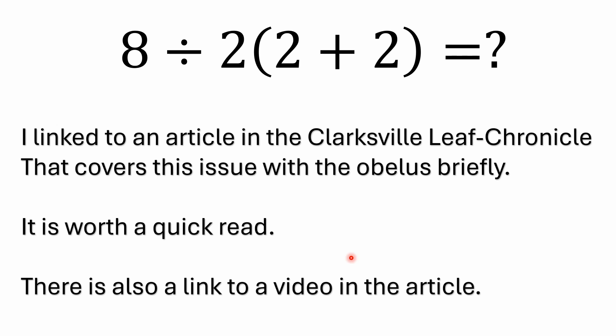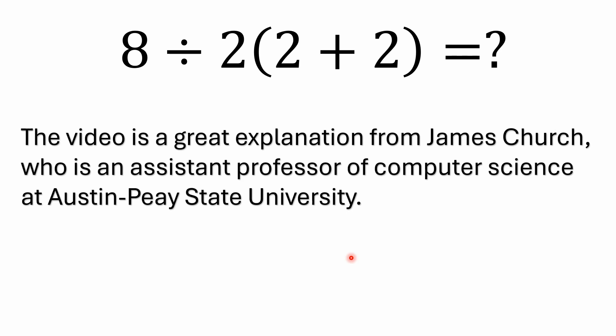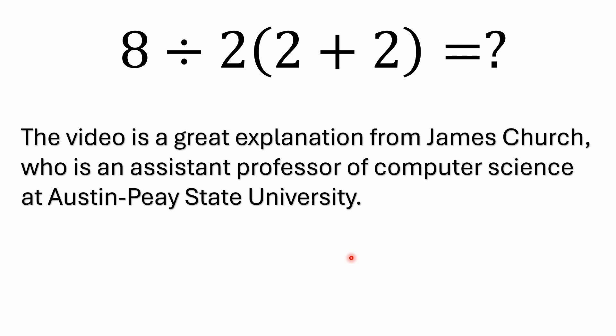Now, there was an article, gosh, I don't know if I have the link to that in this video, honestly. I do back in the video from, I think, July 20th. I'll try to remember to put that in here. But there was an article in there where a mathematician was actually going through the interpretation of the obelus and brought that point up. It was a good explanation. It was from James Church, I think, who says he's an assistant professor of computer science at Austin Peay. Is it Peay or Peay? Honestly, I don't know. State University. But he brought this issue up about the obelus. Again, that's kind of an old, old interpretation, though, of the obelus. You won't really see that listed that way.